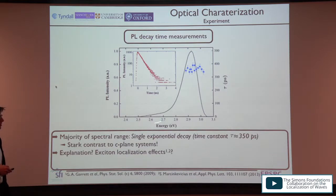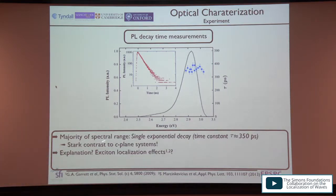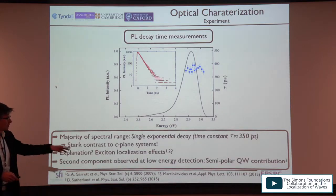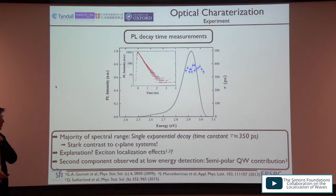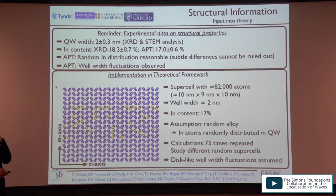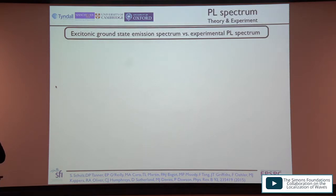The PL time decay measurements in M-plane are very different from C-plane: single exponential decay with a time constant that is approximately constant across the PL spectrum, consistent with exciton localization effects giving a single exponential decay transient. To model this system, we used a supercell with approximately 2,000 atoms, a well width of 2 nm, 17% indium, random alloy, 75 configurations, and a disc-like well-width fluctuation on top. Our calculated exciton emission spectra for two different light polarization vectors show good agreement with the measured PL peak positions.